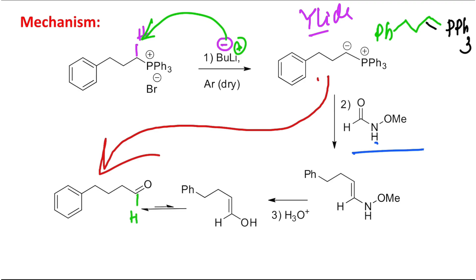There may be confusion: we have studied that when a Weinreb amide reacts with a carbanion it results in a ketone, so why is it an aldehyde here? Because this side we have taken a formic acid derivative — that is why this is an aldehyde.